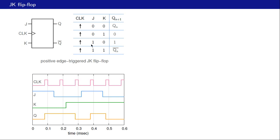At the next active edge, just before it J is zero and K is one, so Qn+1 becomes zero. At the following active edge, J is one and K is one—Qn+1 is Qn-bar, so the output toggles from zero to one. Then with J equal to zero and K equal to one at the next edge, Qn+1 becomes zero. At the last active edge, J is zero and K is one again, so Qn+1 is zero—since Q is already zero, no change is seen.